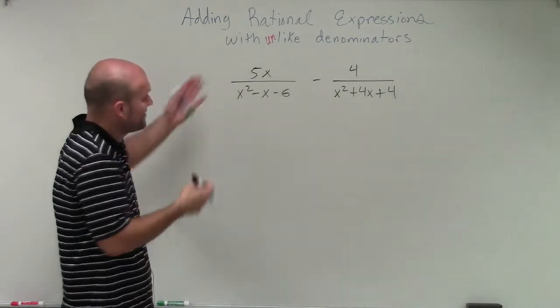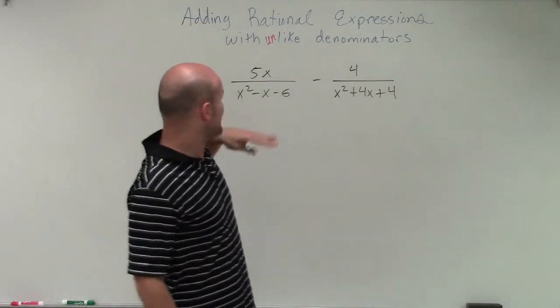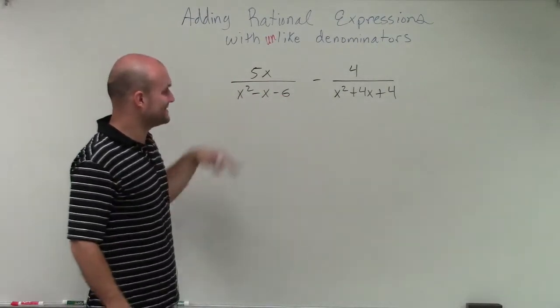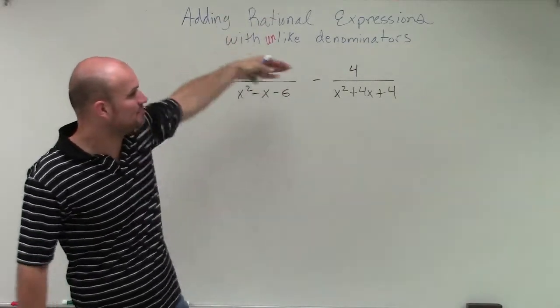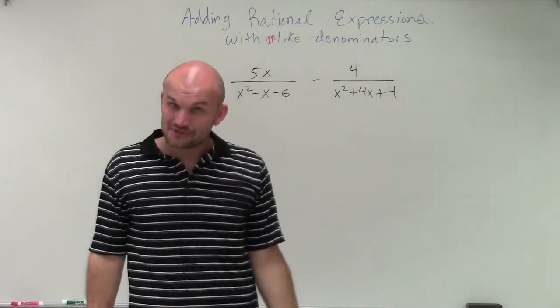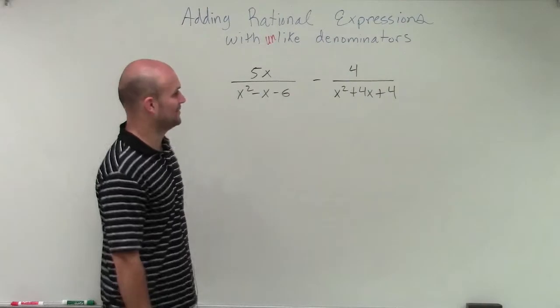Welcome. So what we have here is 5x divided by x squared minus x minus 6 minus 4 divided by x squared plus 4x plus 4. And this looks like a pretty good problem to be able to work with.